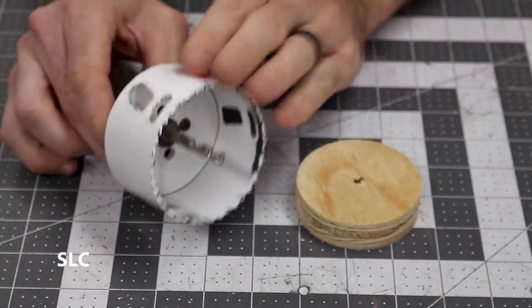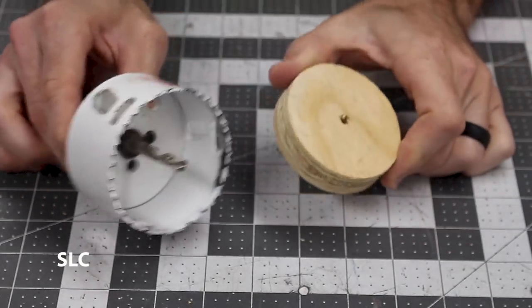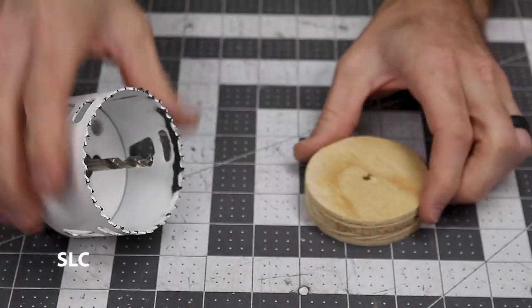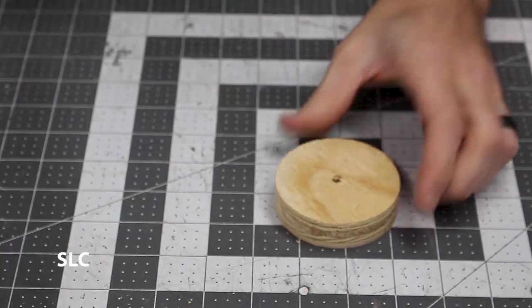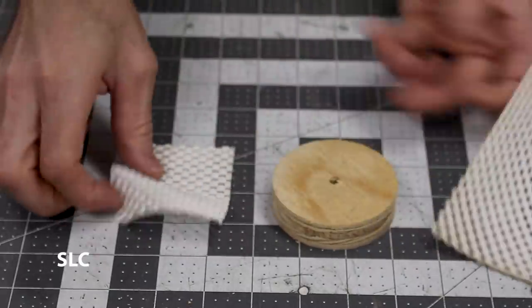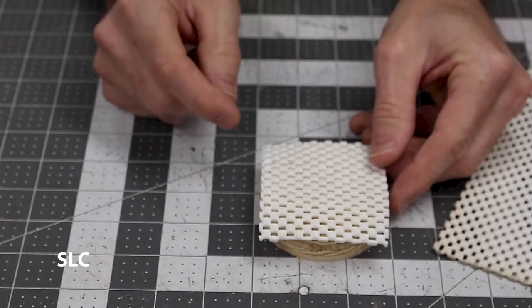All right, now get a hole saw. This happens to be three inch, and you want to cut out some circles. This is just some old plywood scrap that I had. Works great. Once you have these cut out, you want to get some drawer liner. This happens to be stuff you can buy at the dollar store real cheap. Cut out some squares that will fit just over your circle.